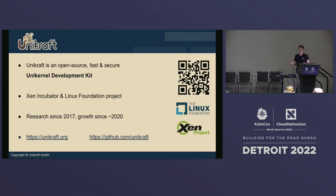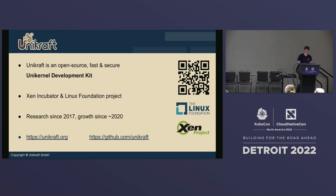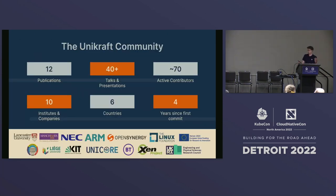So this is what Unicraft does. Unicraft is a unikernel development kit. We started as a Xen incubator project around 2017, and we're actually Linux Foundation, but we're trying to break into the cloud native space because it makes a good use case for lightweight serverless functions, lambdas, etc. We started off as research, we have a lot of industrial partners, a lot of universities we work with, and a lot of contributors that are still with us.